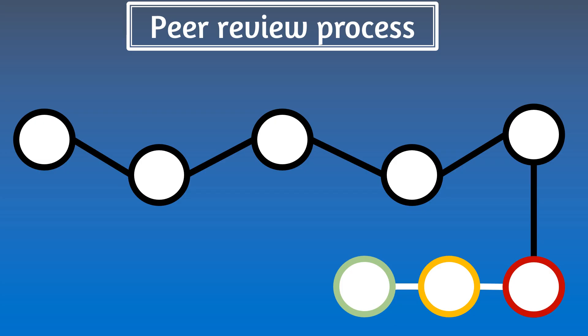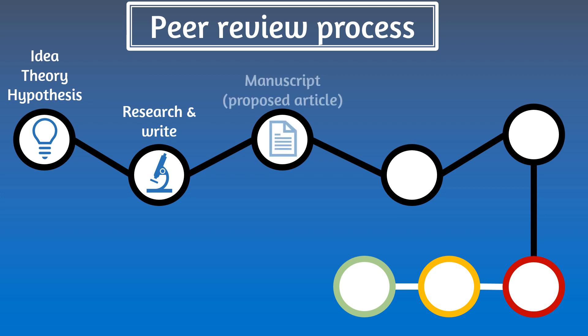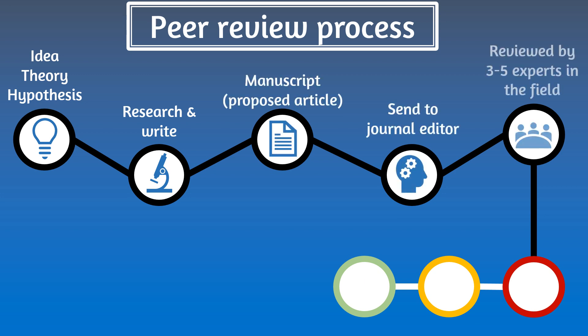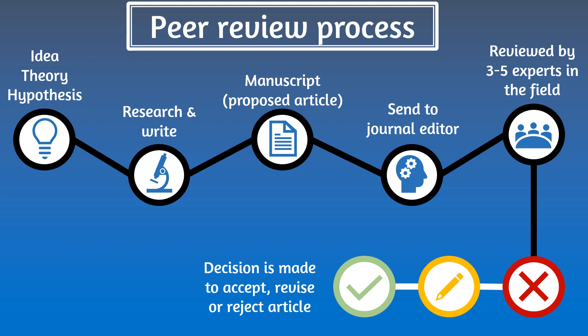Scholarly articles are sometimes referred to as peer reviewed articles. Peer review is a formal quality control process where an article is submitted to a journal to be reviewed by peers who are experts in the academic field. These referees judge whether the article makes a sufficient contribution to knowledge in the discipline area and is of sufficient quality to justify publication. This adds more weight to the credibility and reliability of the article, knowing it has been through this process.